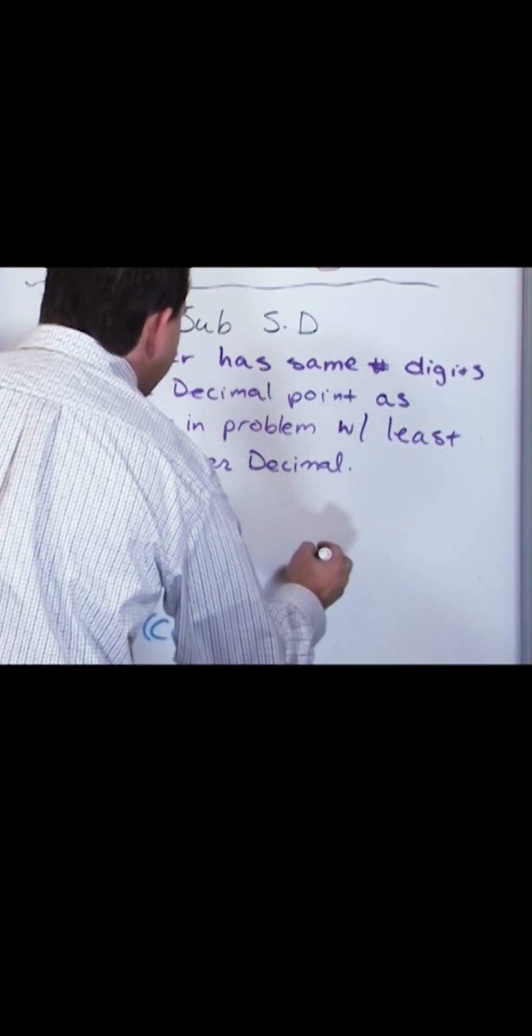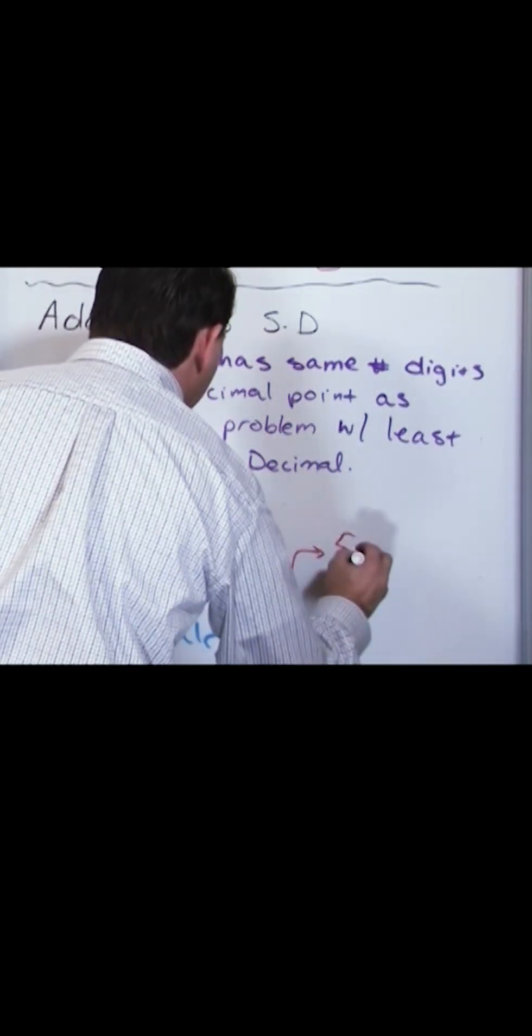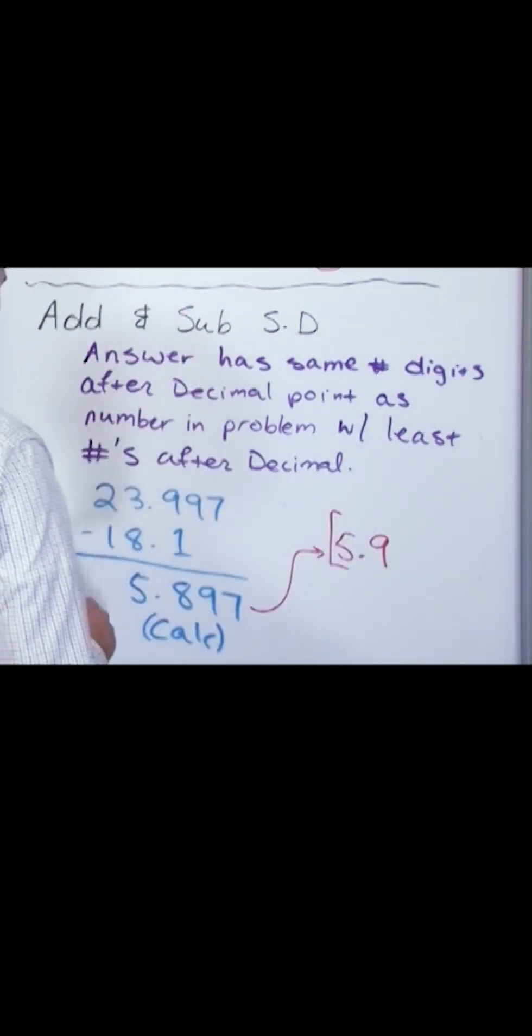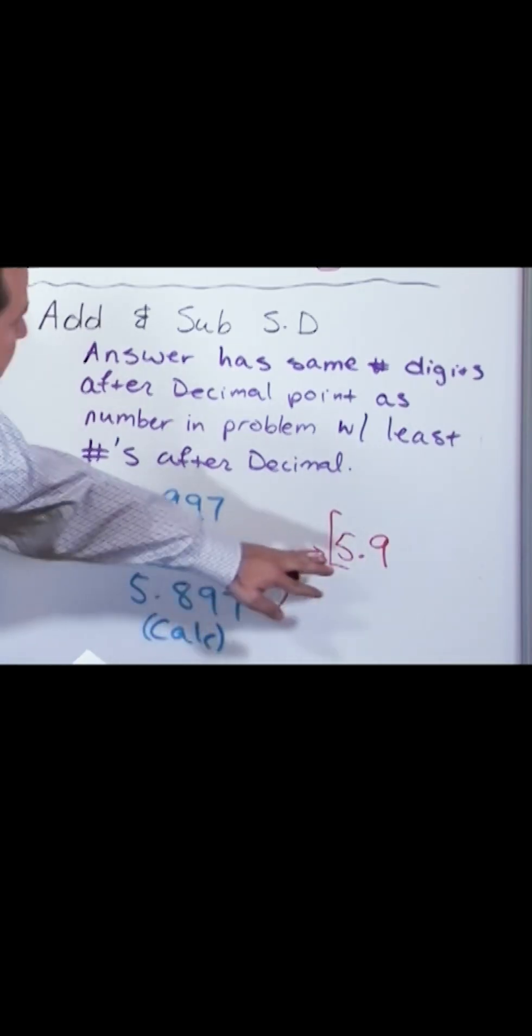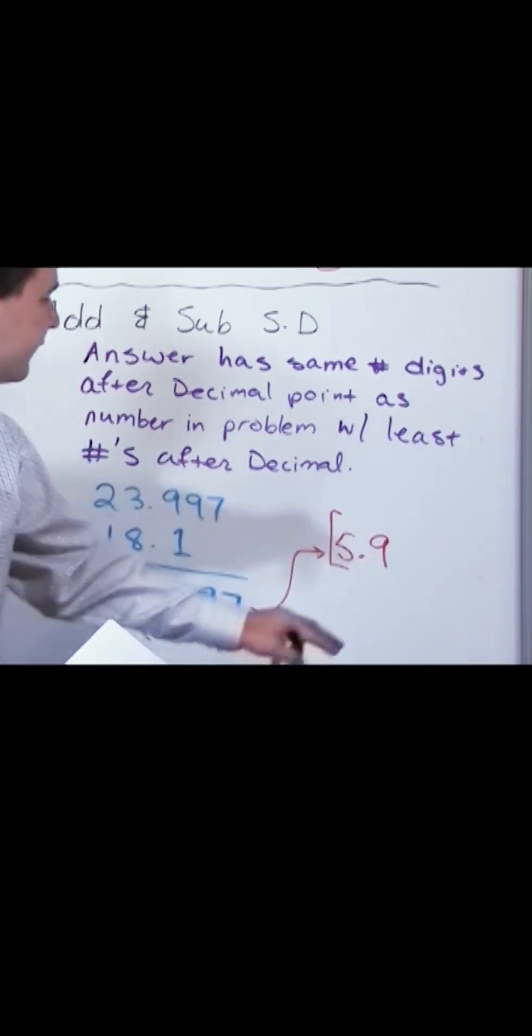So the answer that I'm going to actually keep is 5.9. I'm going to round this up right here. 5.9 with significant digits because this rounds up and I'm going to only keep one digit after the decimal.